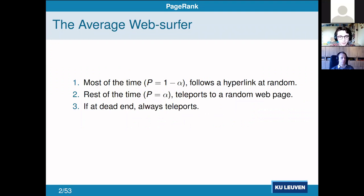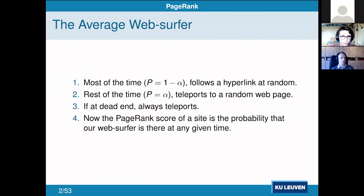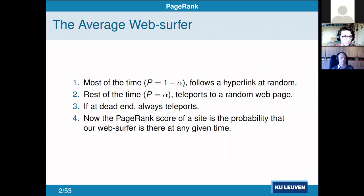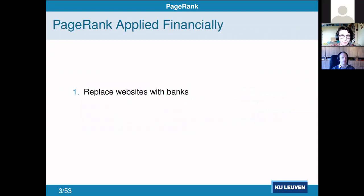Having defined this average web surfer, the most important websites are the ones this surfer is most likely to be on. The PageRank score of a website is the probability that this random average web surfer is there at any given point in time, for any given starting point — a higher PageRank score means a higher probability.